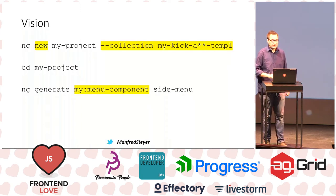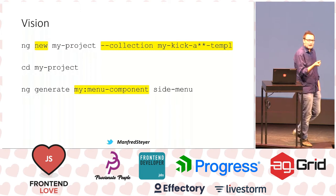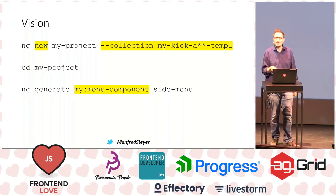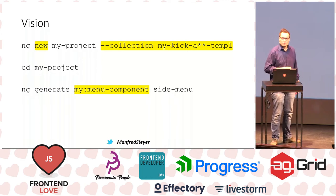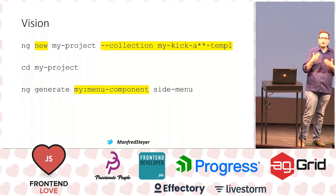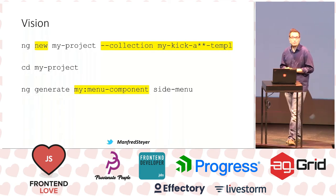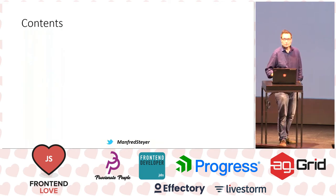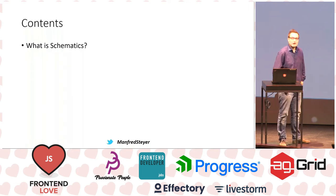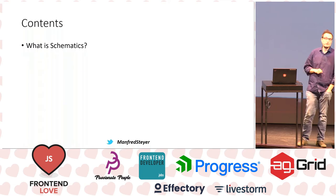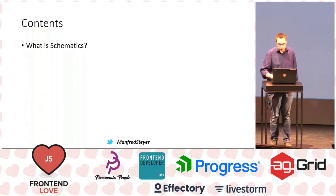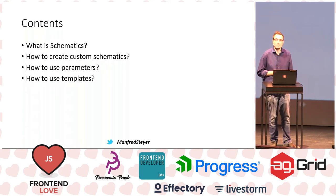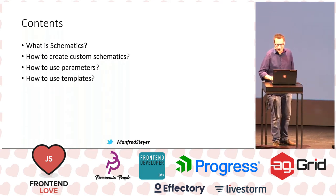The question arises: is there a way to tweak the CLI to create your own stuff? For instance, to use your own project setup, your own set of templates for a new project, or to create a completely custom component type like a menu component. This is exactly what this talk is about. I will show you how to do this with schematics, which is the code generator — the scaffolding tool — sitting behind the Angular CLI. I'll show how to create custom schematics, how to use parameters, and how to use templates.